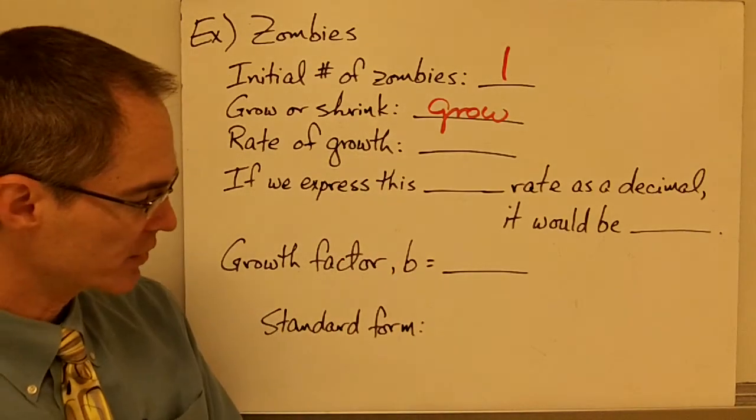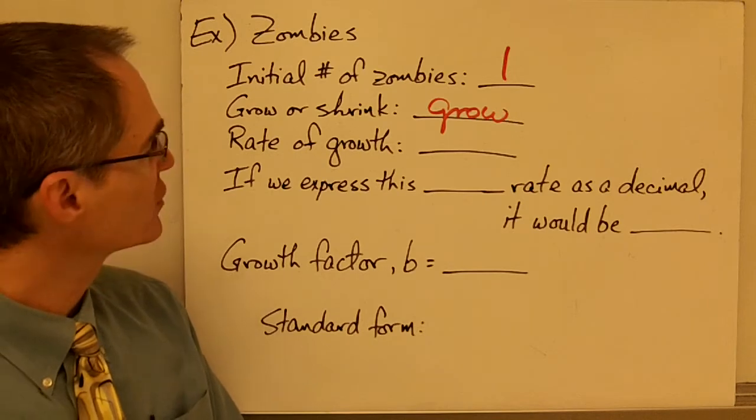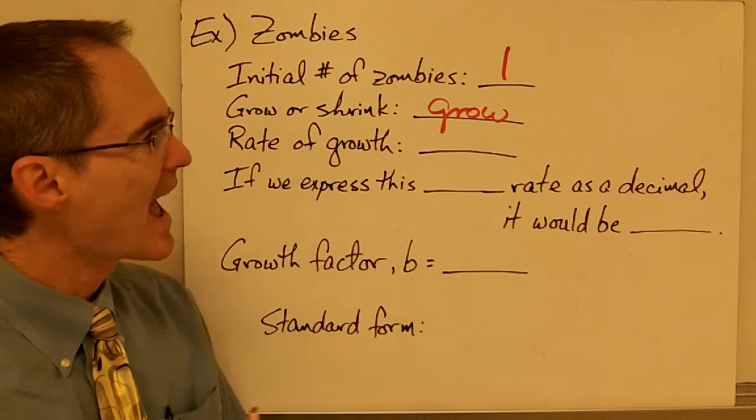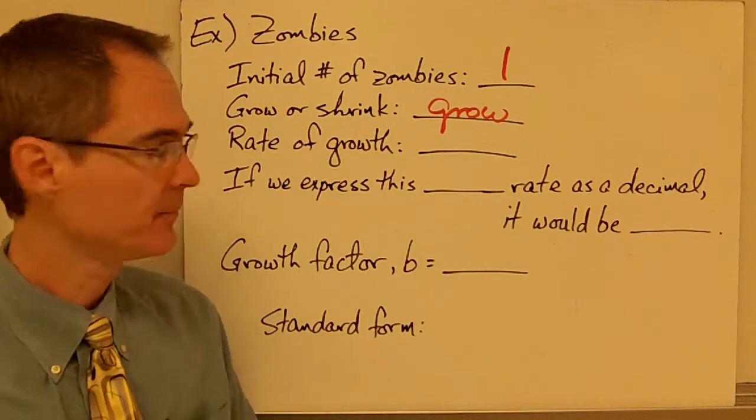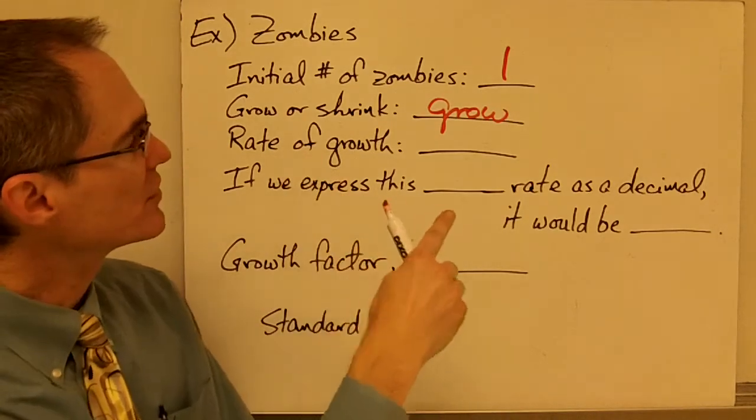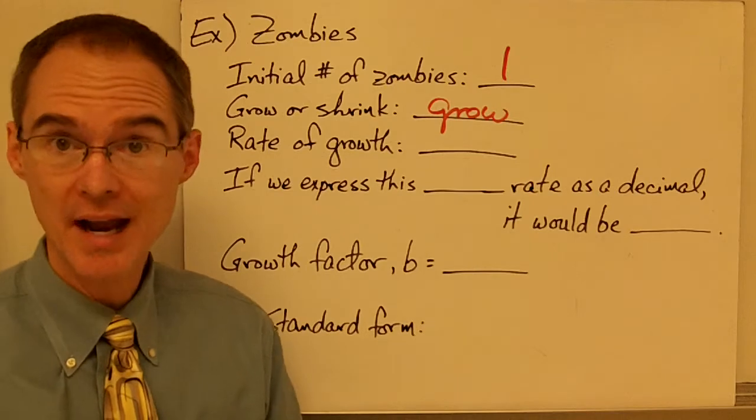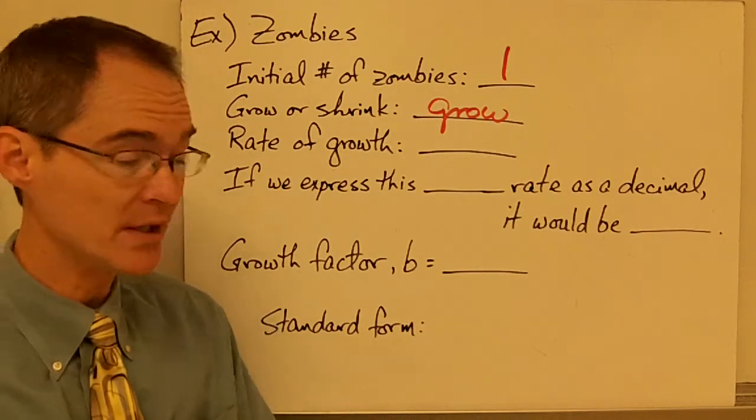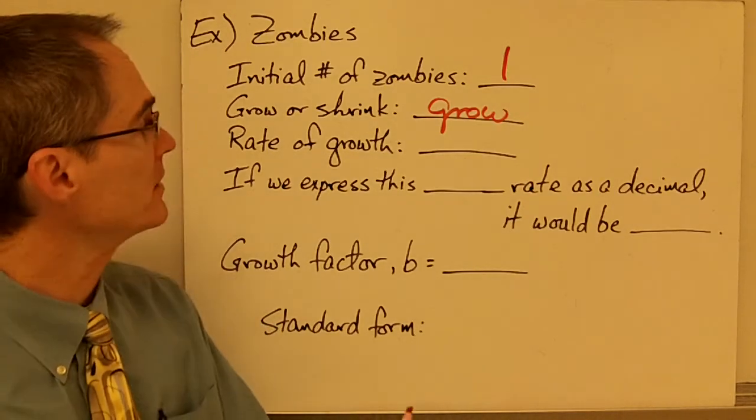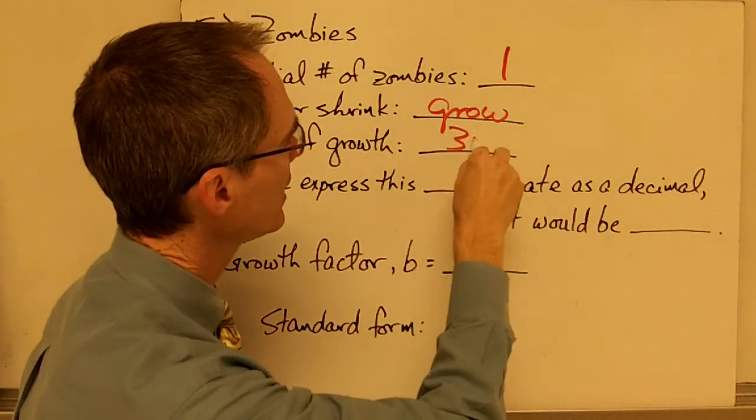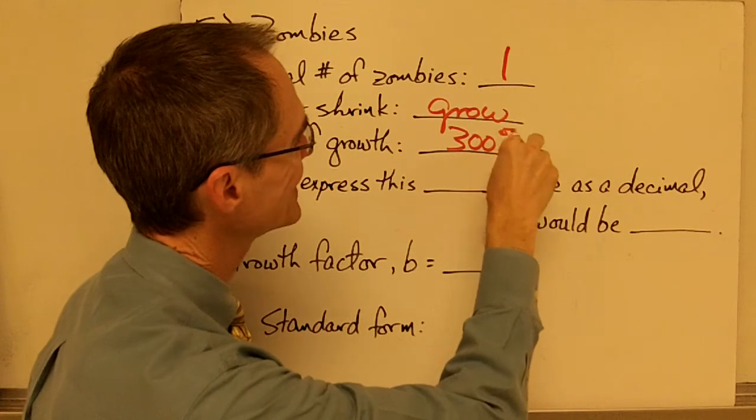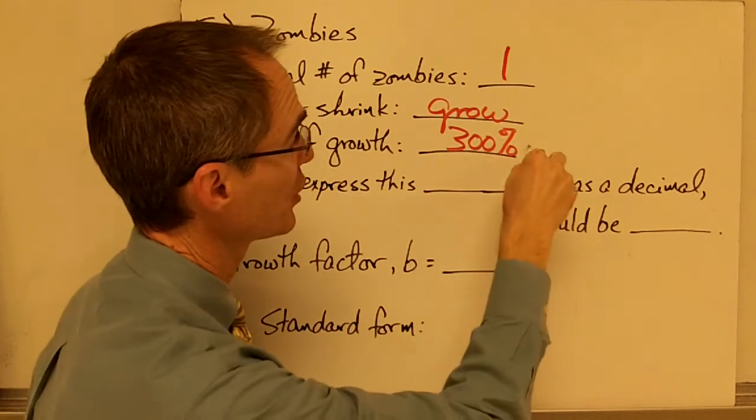All right, next question says, at what rate are the zombies going to grow? In other words, how many new zombies are being created every day? Well, if each zombie is biting three, on average, three humans and turning them into more zombies, then my rate of growth is going to be 300% per day.